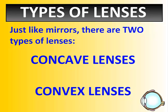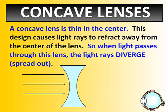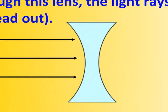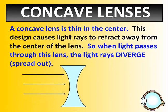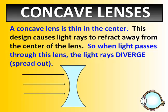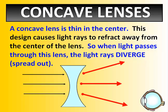Just like with mirrors, there are two shapes of lenses: concave lenses and convex lenses. We'll start with concave lenses. Both sides of a concave lens curve inward — it caves in and is thinner in the center. When light strikes from the left and hits the lens, it passes through rather than bouncing back like a mirror. A concave lens will actually diverge the light — it will spread out.